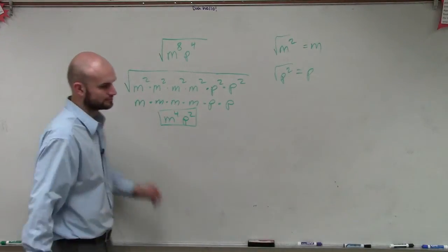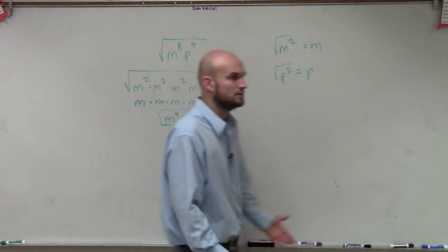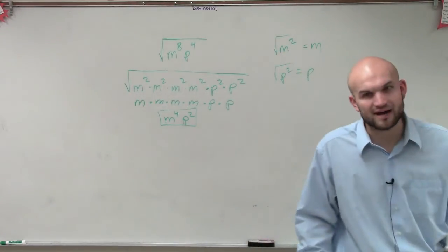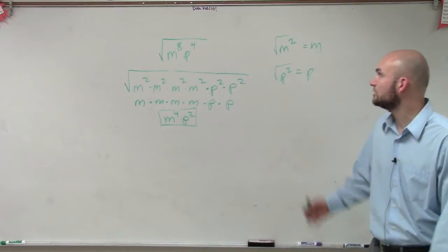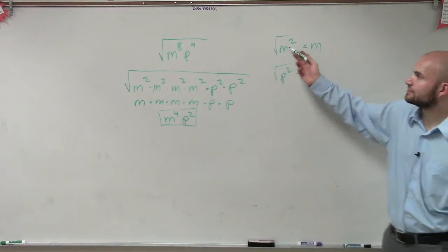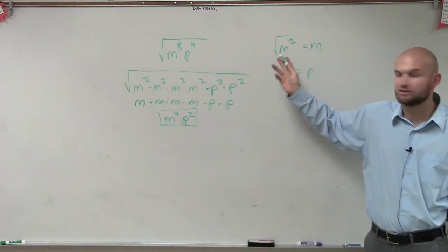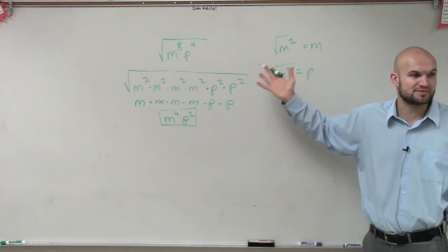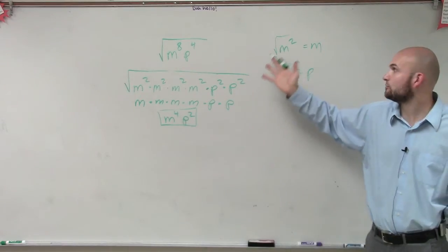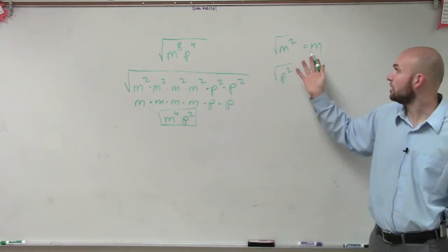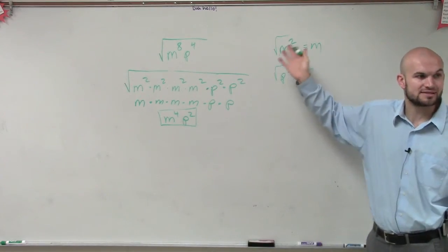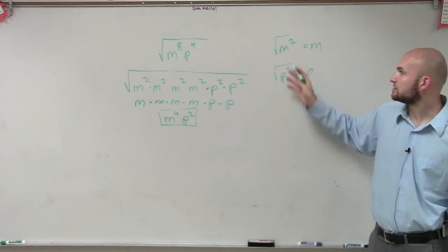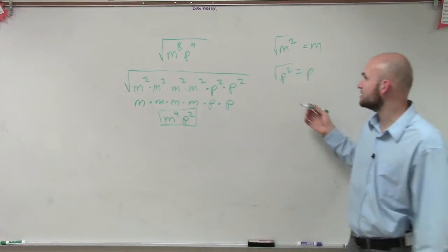So the square root is like dividing the exponent by two — you're not really dividing by two, you're undoing it. The square root of m squared asks: what two numbers multiply by themselves to equal m? Well, that would be m, because m times m is m squared.